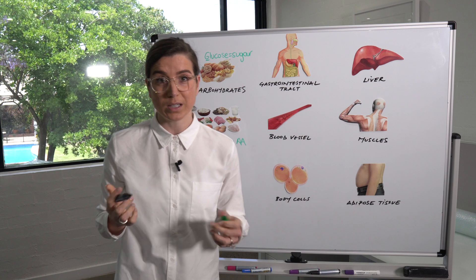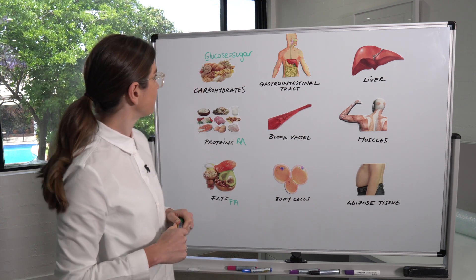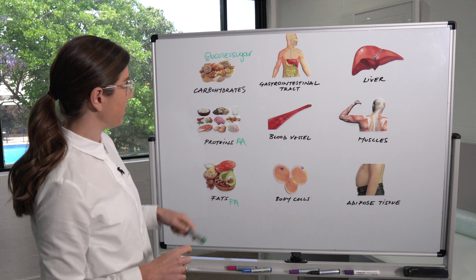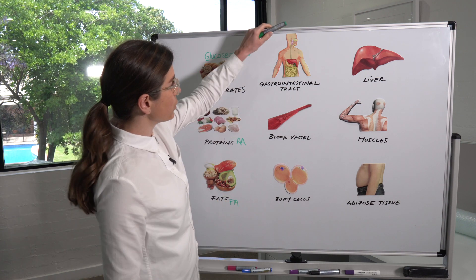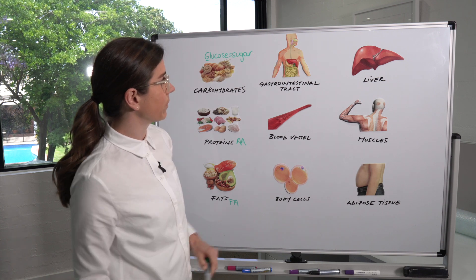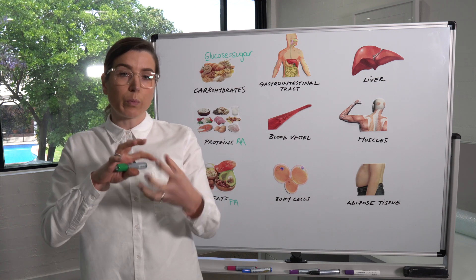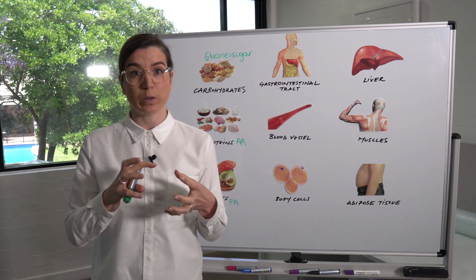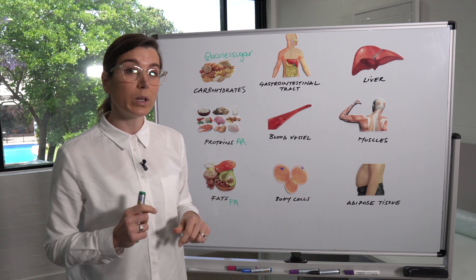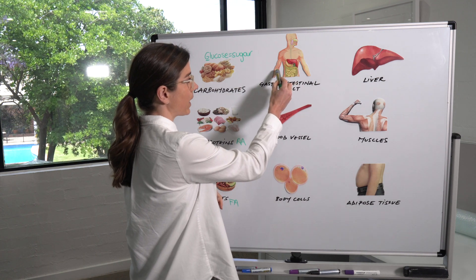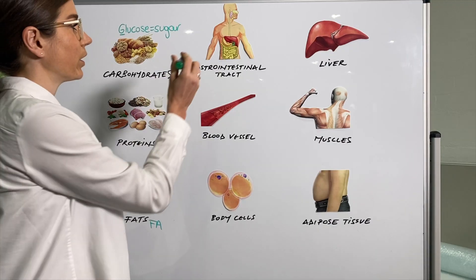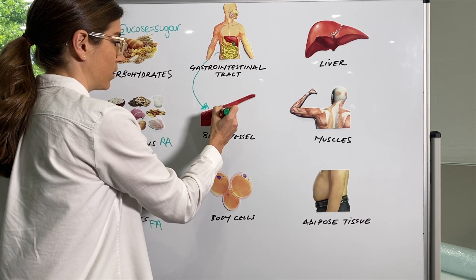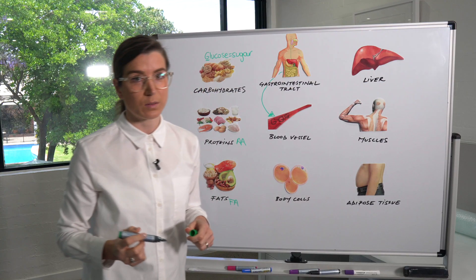I will use glucose and sugar interchangeably because they refer to the same thing. When you eat a meal containing any combination of the three macronutrients, you chew it, it goes down your esophagus and into your stomach, where it's broken down into these smaller molecules. Because they are so small, they can get through your gut wall and into your blood — as glucose.